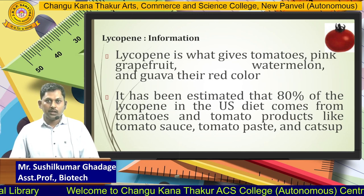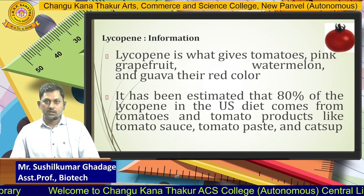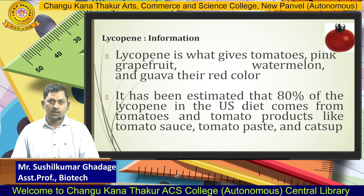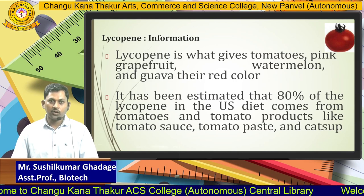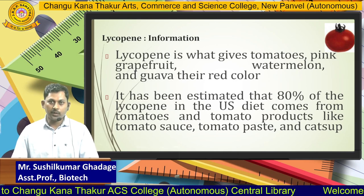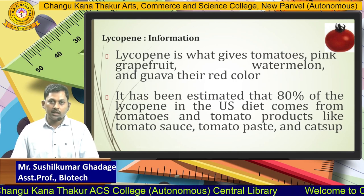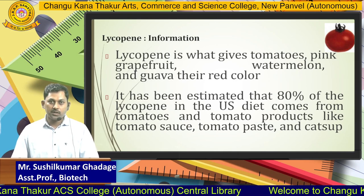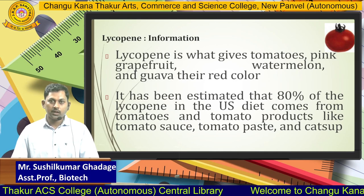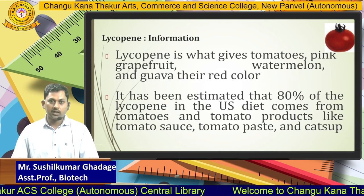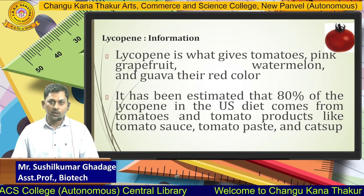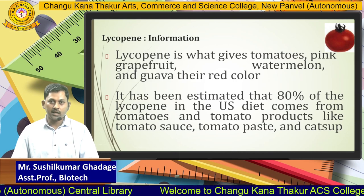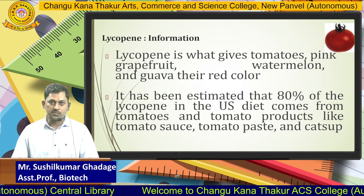Tomatoes, grapefruit, and watermelon have their red color because of lycopene. It has been estimated that almost 80% of the lycopene in the US diet comes from tomatoes and tomato products like tomato sauce, tomato paste, and ketchup.